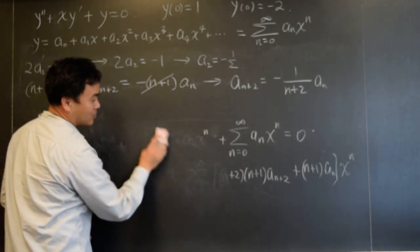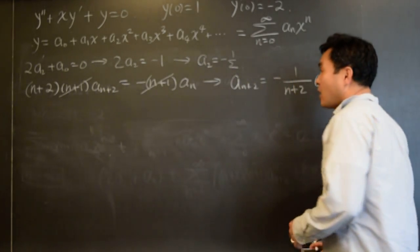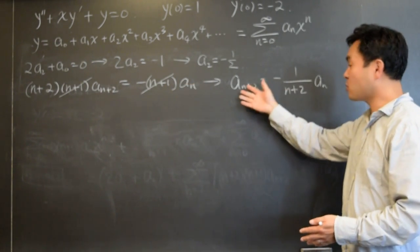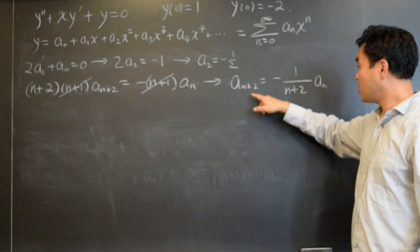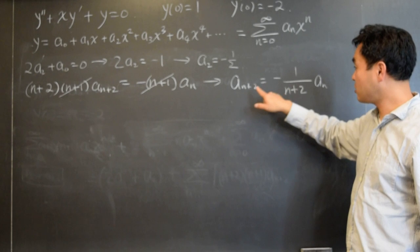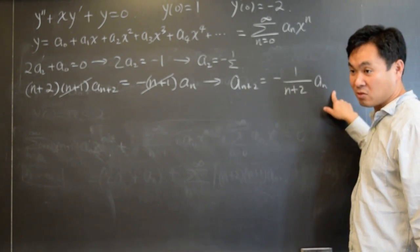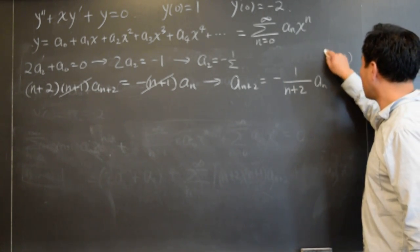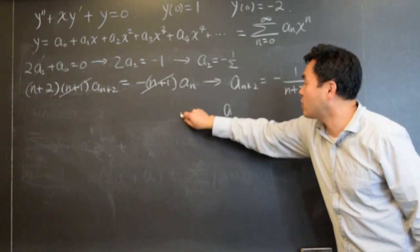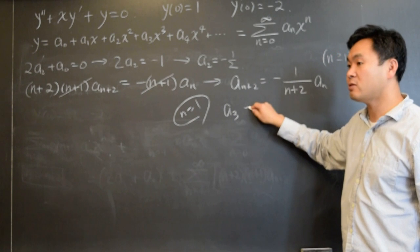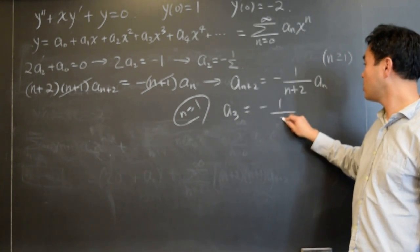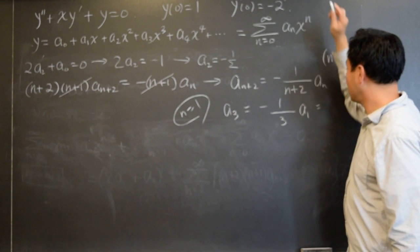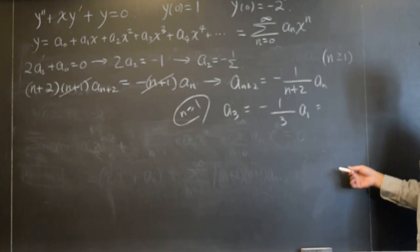How do you know if you want to solve for a n or a n plus two? You always solve for the higher one because a zero and a one, once they're determined, that will determine a two, a three, a four. So the recurrence relation should be solved for higher ones so that you can express the later terms by the previous terms. Okay, so this is true for n one or greater. So let's start with n equals one and see what it says. When n is one, a three is negative one over three a one. What's a one? Negative two? That's your a one, right? Okay. So negative one-third times negative two is two-thirds.